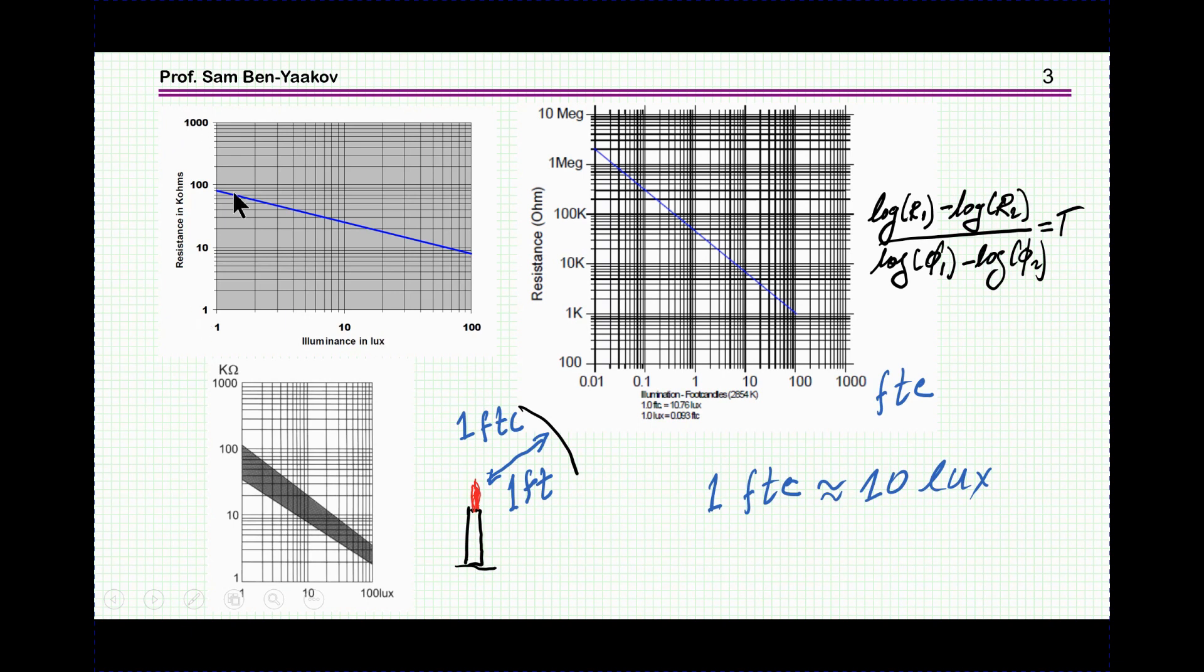Being a semiconductor, this is an exponential change. So we see that in a log-log scale, the resistance as a function of illumination is a straight line. This is just drawn by hand, but in practice it is a straight line.